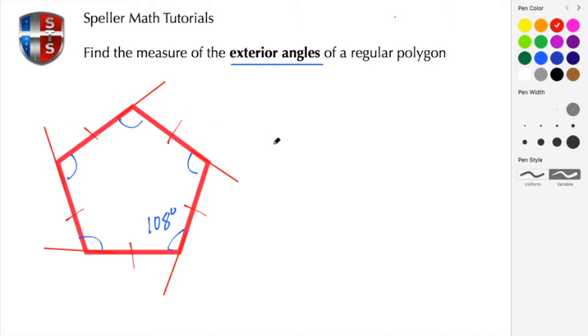What we're going to find is that each one of these exterior angles also has a measure, or all the measures are also the same. So let's put these symbols in to show that.